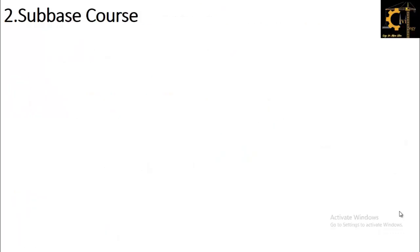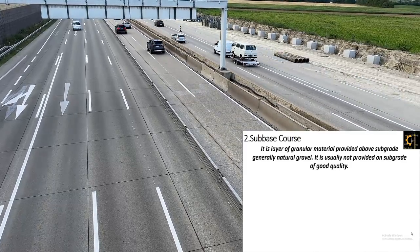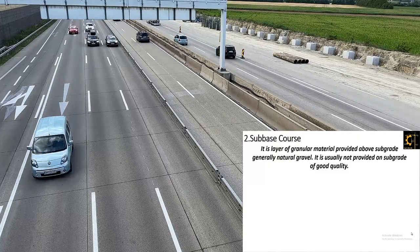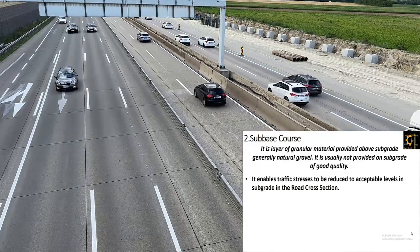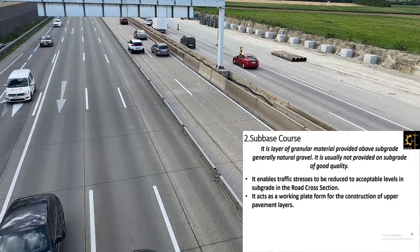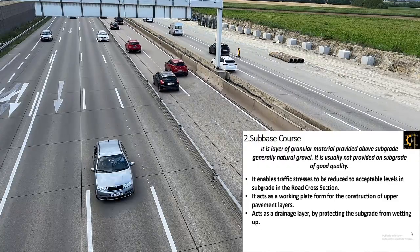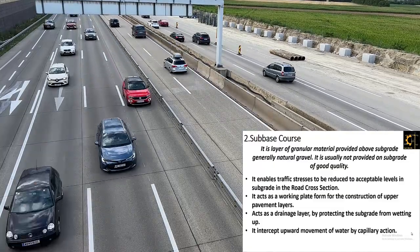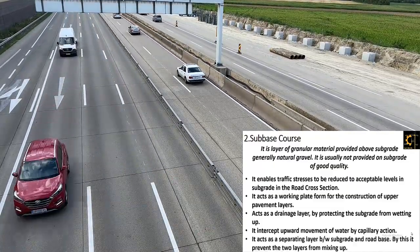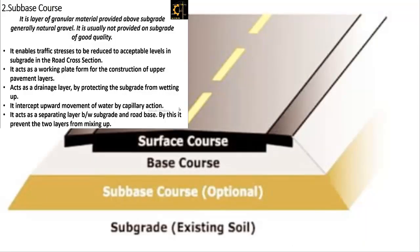The second structural component of the road is the sub-base course. It is a layer of granular material provided above the subgrade, generally natural gravel. It is usually not provided on subgrade of good quality. It enables traffic stresses to be reduced to acceptable levels in the subgrade. It acts as a working platform for the construction of upper pavement layers, and acts as a drainage layer by protecting the subgrade from wetting up. It also intercepts upward movement of water by capillary action, and acts as a separating layer between the subgrade and road base, preventing the two layers from mixing up.